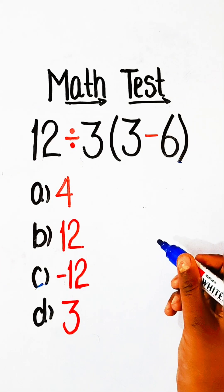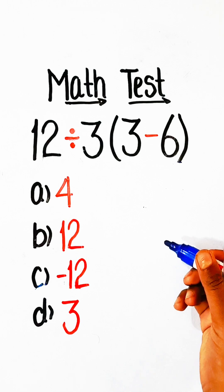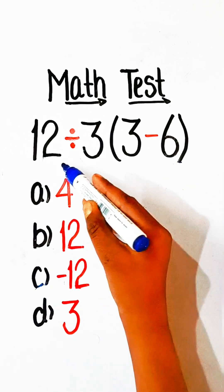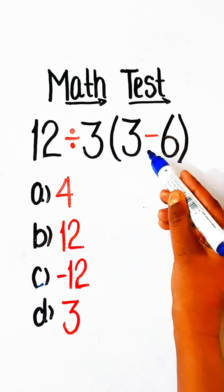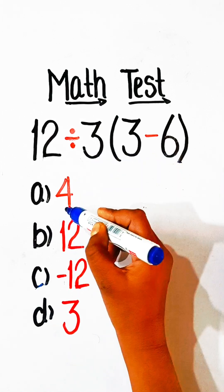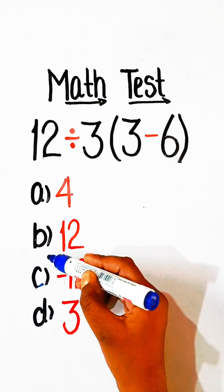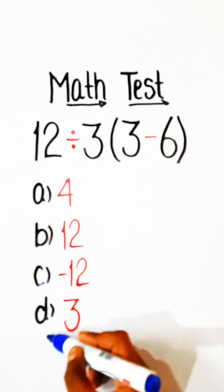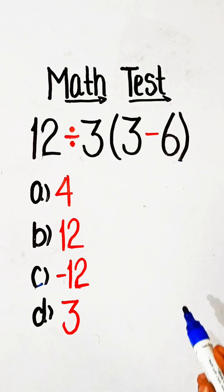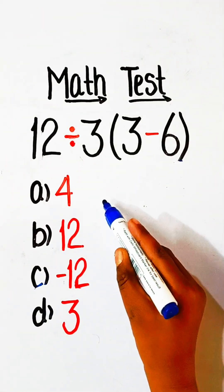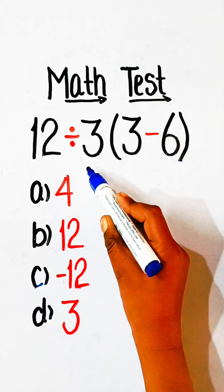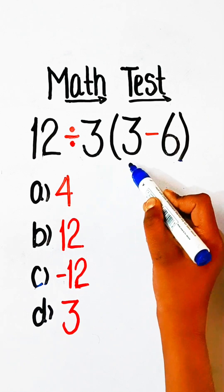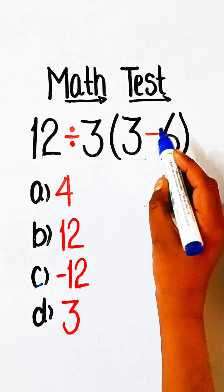Hello everyone, welcome back to my YouTube channel. In this video we will solve this math equation: 12 divided by 3 under bracket 3 minus 6 equals to what? Option A: 4, Option B: 12, Option C: minus 12, or Option D: 3. So here we have division and bracket part, so we will solve the bracket part first.